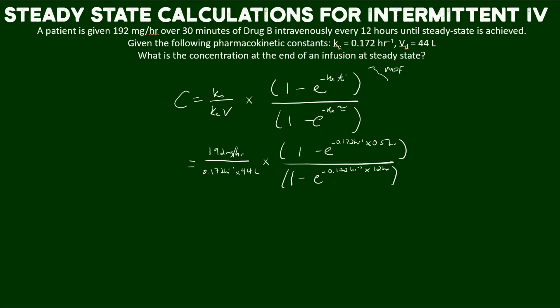So we have 192 milligrams per hour as our k naught — that's the infusion rate — and we have our elimination rate and volume of distribution below that. On the right side of the equation we have 0.5 hours, which is our infusion time or t prime, because we were told it's given over 30 minutes. That conversion gives us 0.5 of an hour, so that our units match.